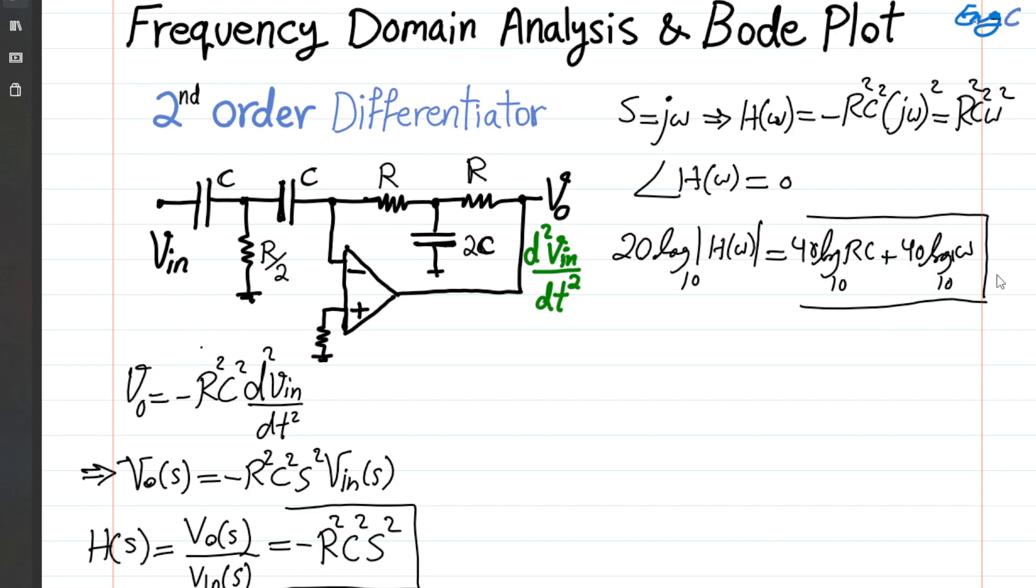This is referred to as dB, so the dimension or unit for this is dB. So every time frequency is increased by 10 times, there is a value of 40 added to the magnitude of this transfer function in dB.